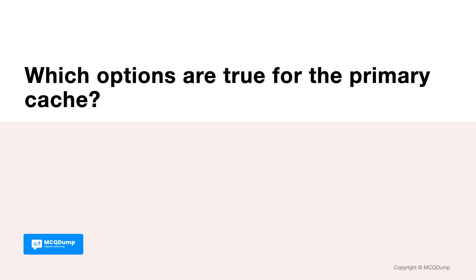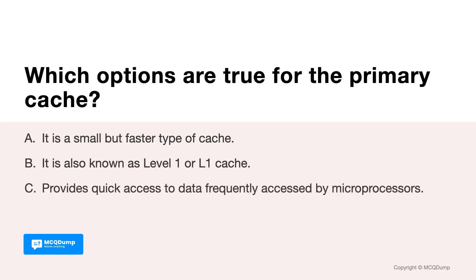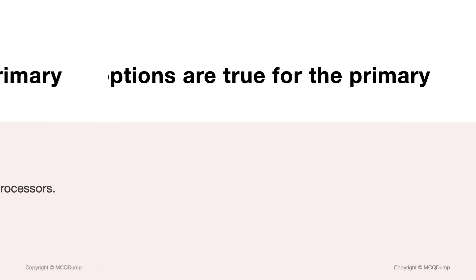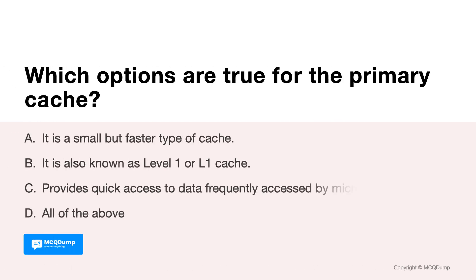Which options are true for the primary cache? Options are: A. It is a small but faster type of cache. B. It is also known as Level 1 or L1 cache. C. Provides quick access to data frequently accessed by microprocessors. And D. All of the above. Answer is D. All of the above.